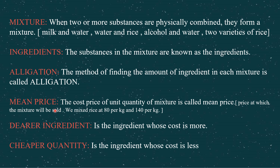The mean price is the cost price of the new mixture. For example, if you mix rice at 80 per kg and rice at 140 per kg, you will sell the mixture at a price a little lesser than 140 and a little higher than 80 — that will be called the mean price. The ingredient which is expensive is called the dearer ingredient, and the ingredient which is less expensive is called the cheaper ingredient.